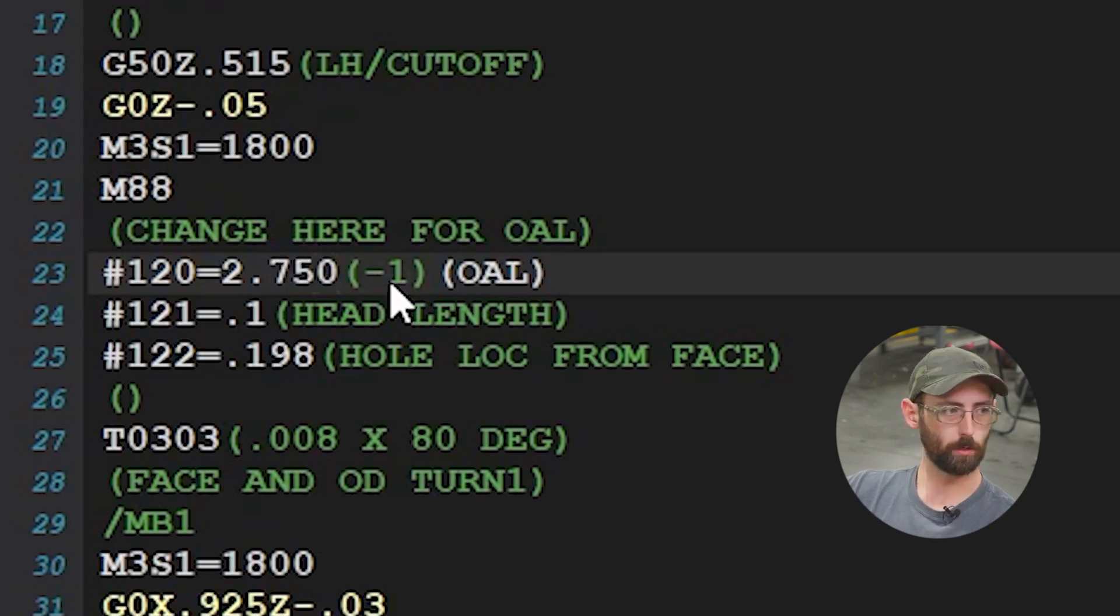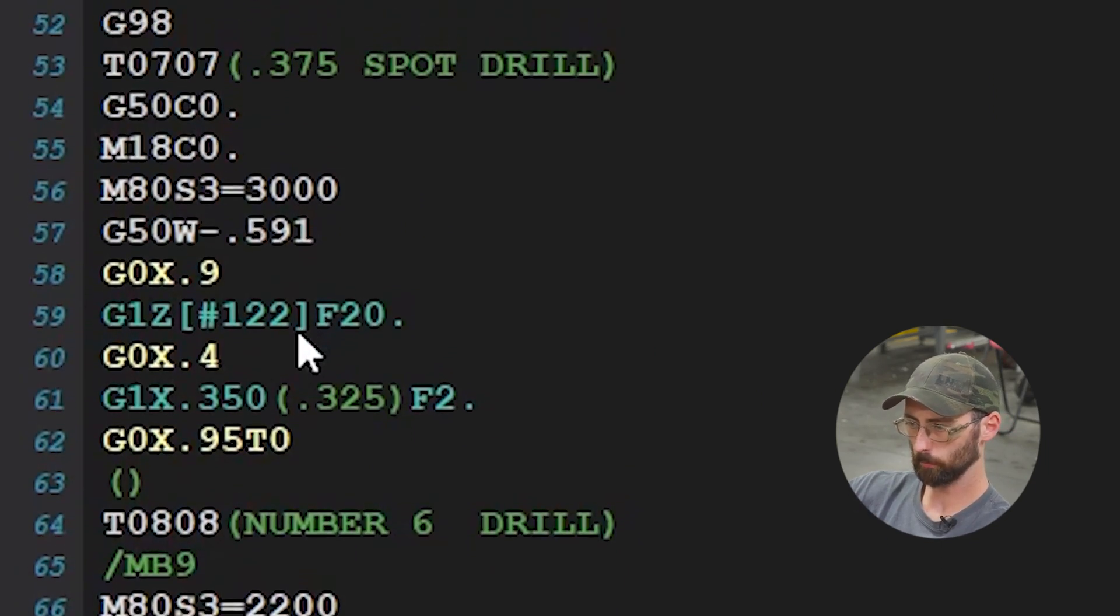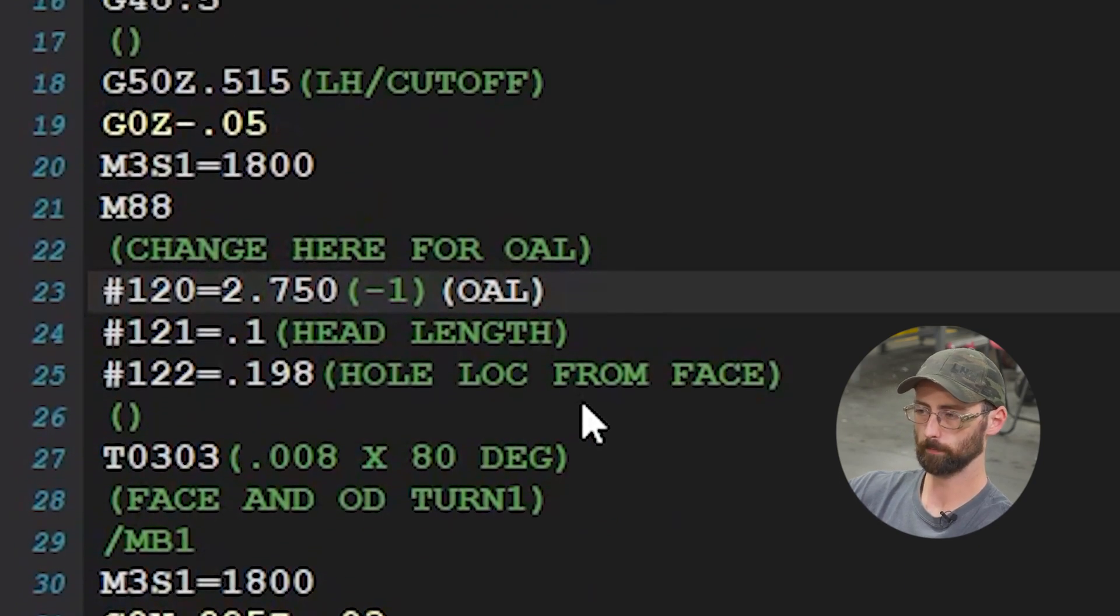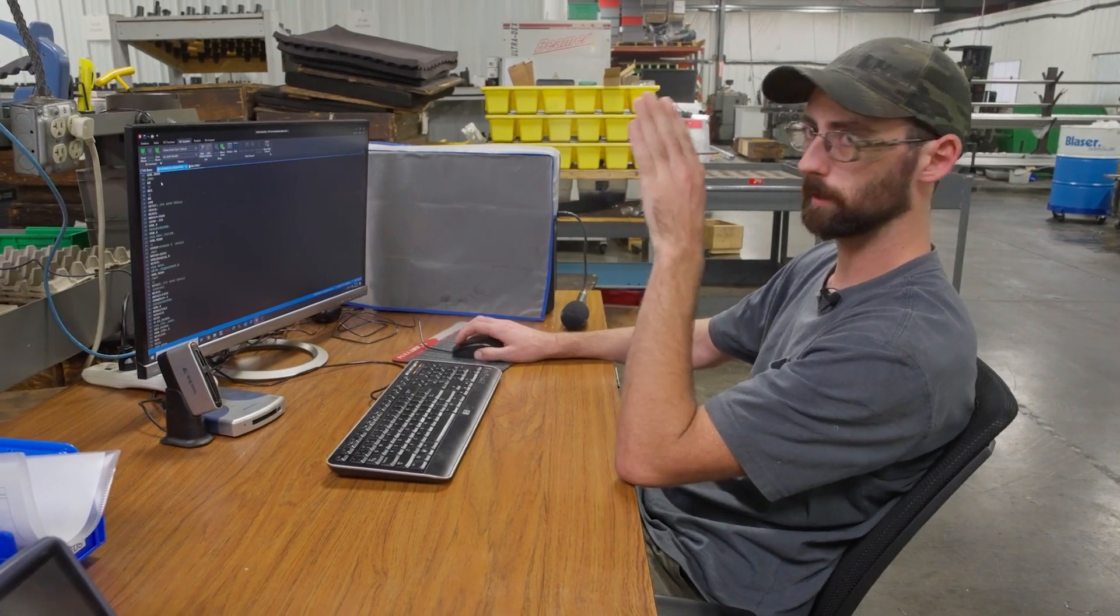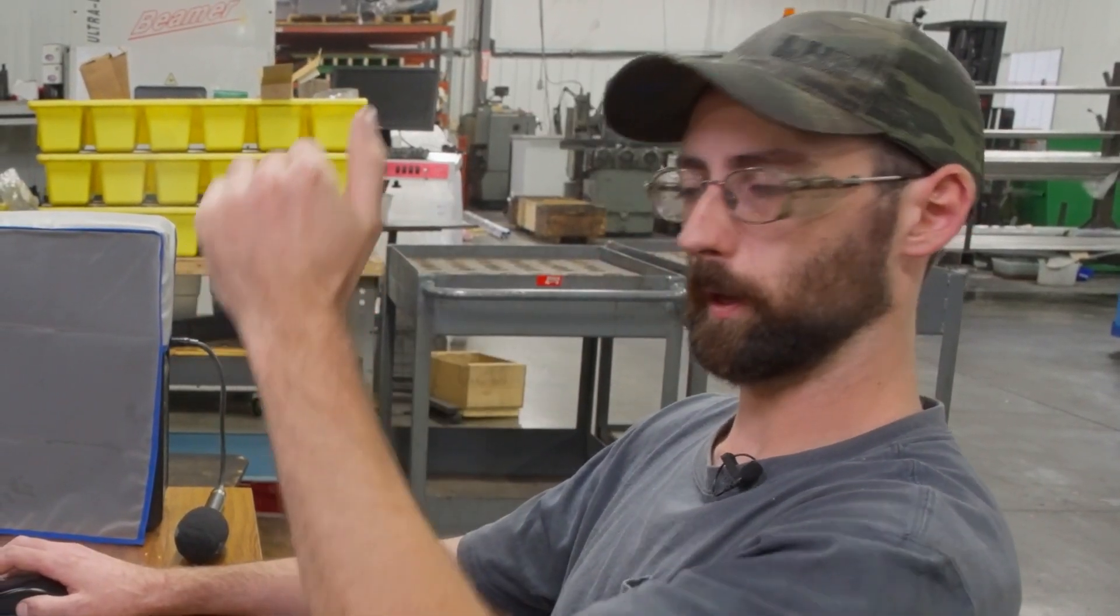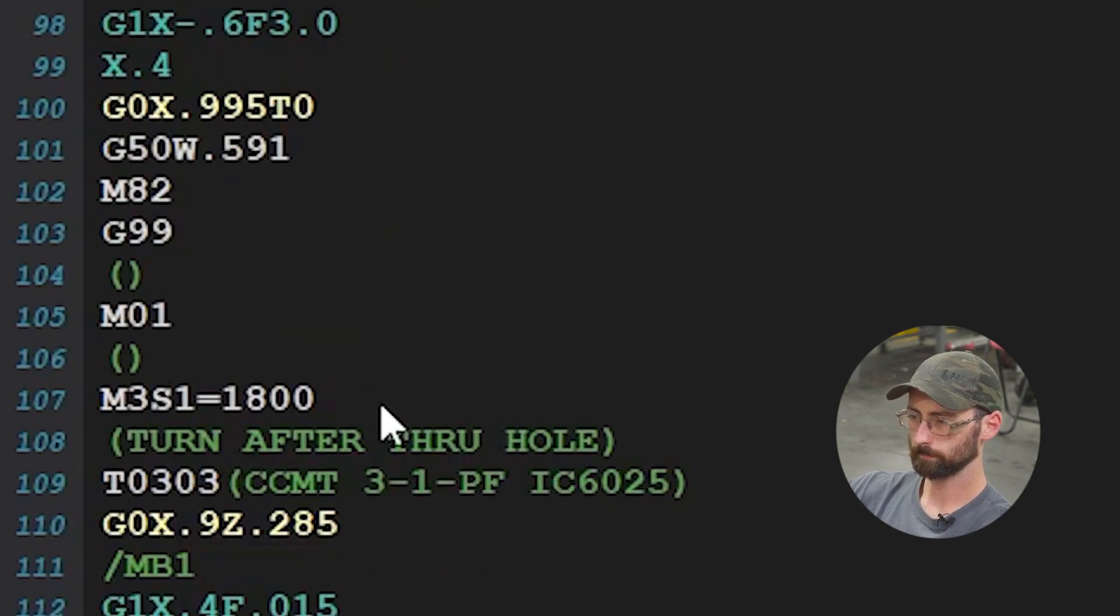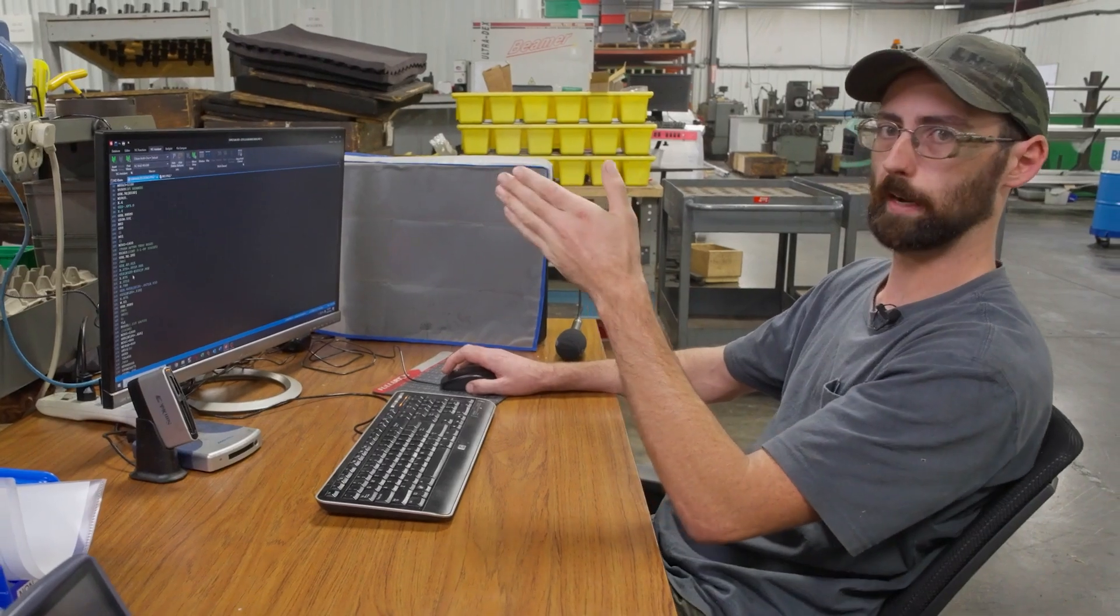Maybe the next part is 2.750 long. All we have to do is change this variable. I'll do a slow roll through the program. You'll see we're using these variables throughout. We have #122, which is a hole location from the end. We can adjust this if we need to move it. The whole program reads that variable and uses that number.